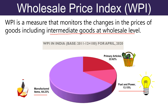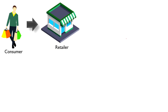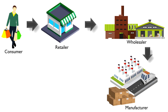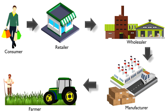Let us understand the concept of Wholesale Price Index and Consumer Price Index. Wholesale Price Index measures the changes in the prices of goods sold and traded in bulk by wholesale business enterprises to other business enterprises. Suppose you go to a departmental store to buy some goods. The retailer buys that goods from a wholesaler and the wholesaler buys the same goods from a manufacturer. And the manufacturer buys raw material from a farmer. And in this way, the flow continues.